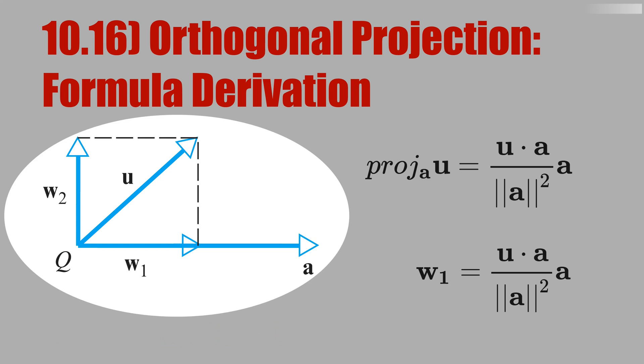the vectors u and a have a common point, q, and then you want to decompose u into two vectors, w1 and w2.